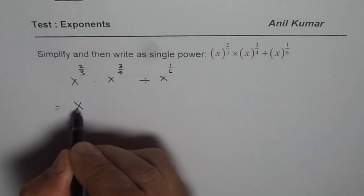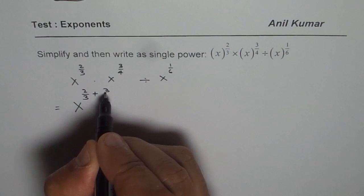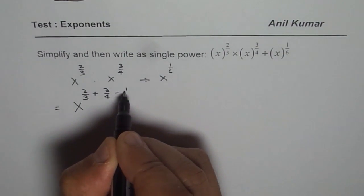So we could write this as x to the power of 2 over 3 plus 3 over 4 minus 1 over 6.